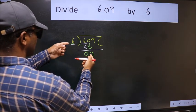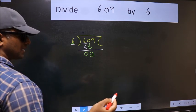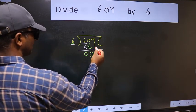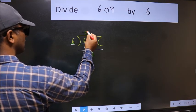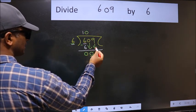0 is smaller than 6. So we should bring down the second number. And the rule to bring down second number is we should put 0 here.